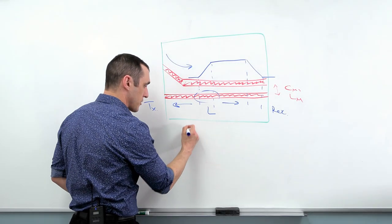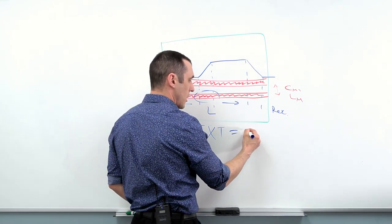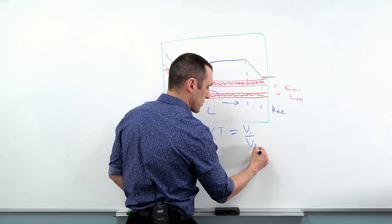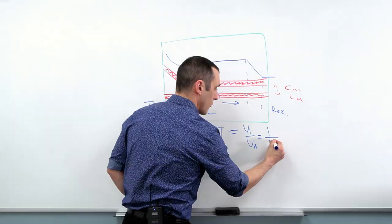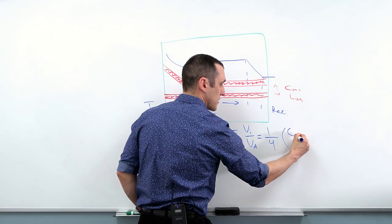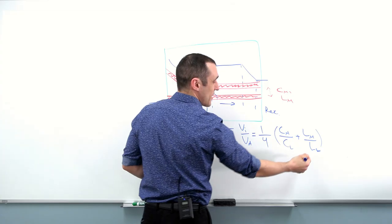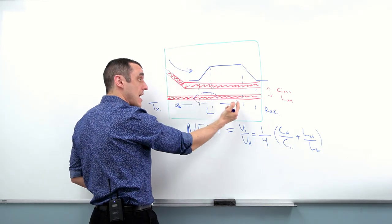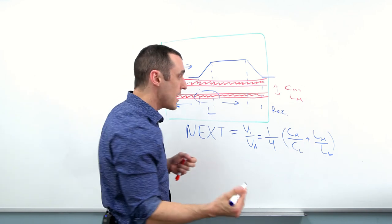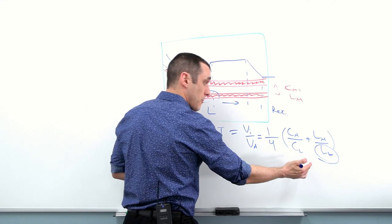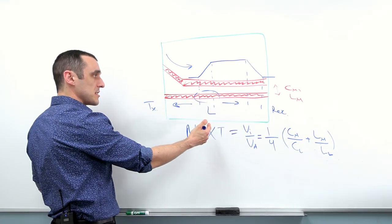NEXT, or near-end crosstalk, is defined as the ratio of the induced voltage on the victim to the voltage on the aggressor. It equals one-fourth times the quantity: mutual capacitance divided by the line's capacitance per unit length, plus mutual inductance divided by the line's inductance per unit length. This inductance-per-unit-length value is something Altium Designer's layer stack manager with the impedance tool will tell you directly, as will the capacitance.